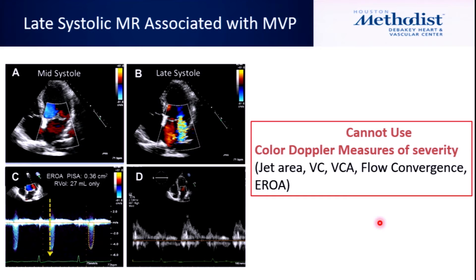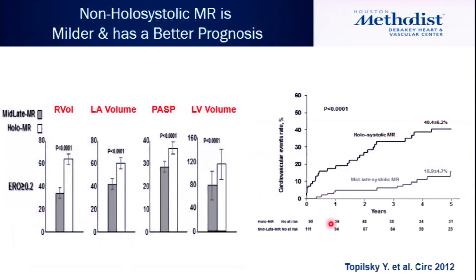This is very important: you cannot use color Doppler measures of severity — neither the area, nor vena contracta, nor flow convergence, nor effective regurgitation orifice area — for non-holosystolic mitral regurgitation. In your mind, if you have non-holosystolic MR, it's almost half of what you think. The only thing you can do is measure regurgitation volume using only that tiny portion of the regurgitation, and the regurgitation volume is then adjusted by roughly half.